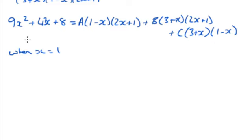So when x is 1, we're going to get 9 + 43 + 8, which is going to be 60. And on the right hand side we're going to get B times by 4 and times by 3. So 12B is equal to 60, so B is 5.